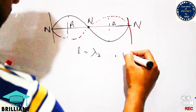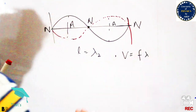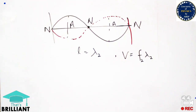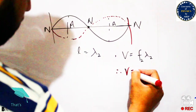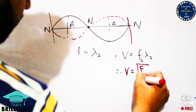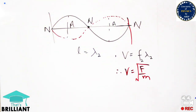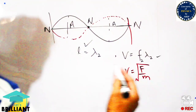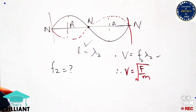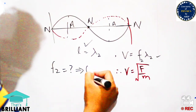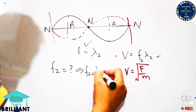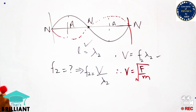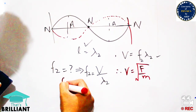This is a two-loop wave, so l equals lambda₂ and v equals f₂ times lambda₂. We know the velocity formula v equals square root of F over m from wave motion, and lambda₂ equals l. We substitute these values to calculate the frequency f₂ for the two-loop wave.